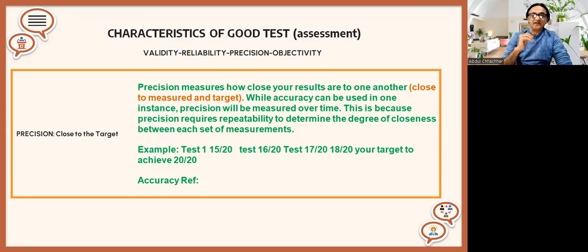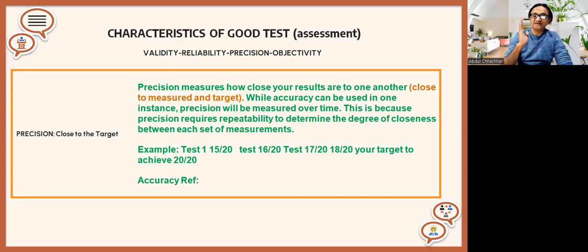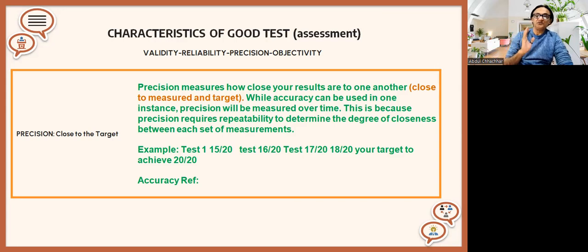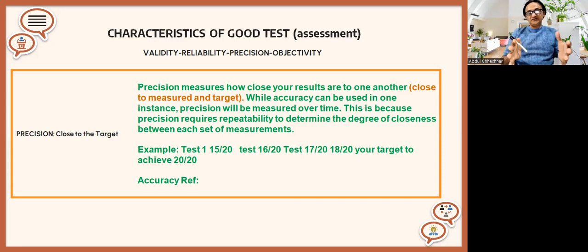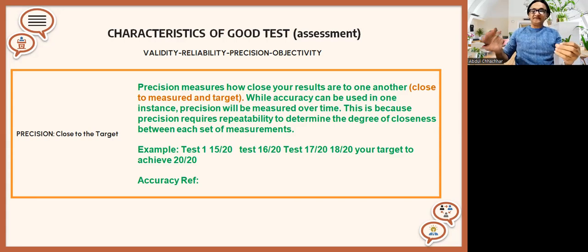Precision means that when you are repeatedly attempting these things — for example, you set targets for your students to get high attendance in your course and you are assessing the students — in test one the students got 15, in test two they got 16, in test three 17, and in test five 18. That means you are moving toward your target, getting close to it. So precision measures how close your results are to one another and to the measured target. If a student's score is at 15 and after repeating the test improves to 18 or 19, that is what we call precision.